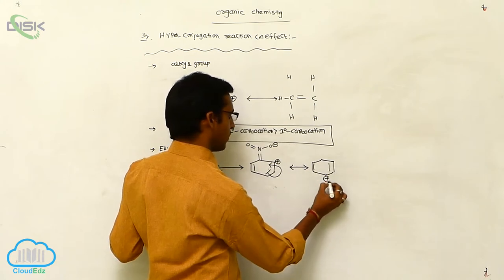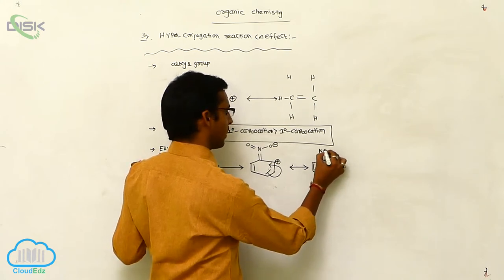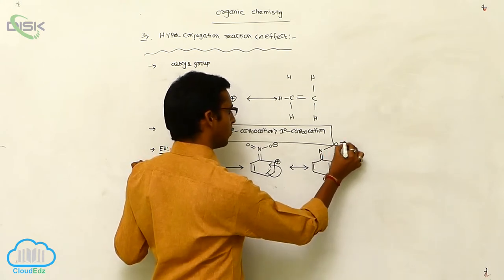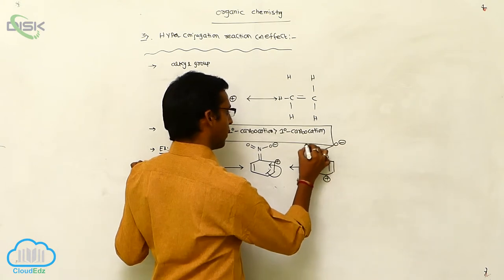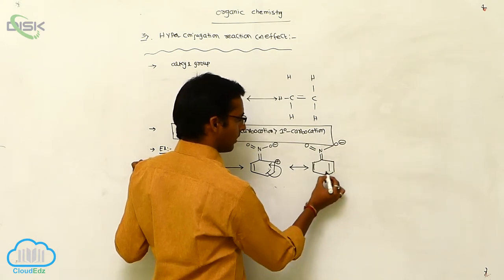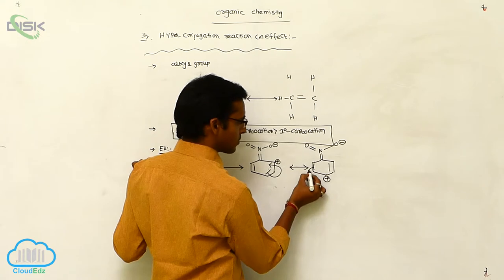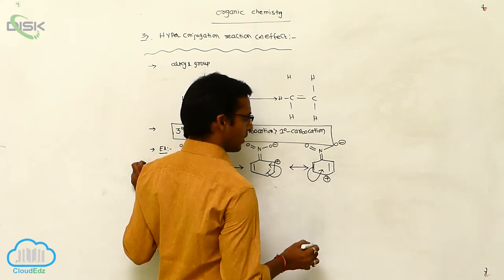You are getting a positive charge here, with a double bond with the nitro group, O minus here, and double bond O. Again, this positive charge and negative charge interact.